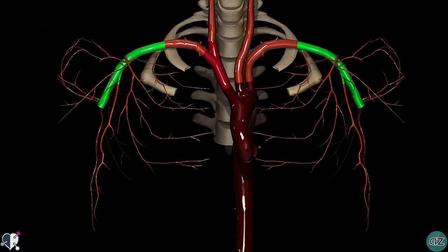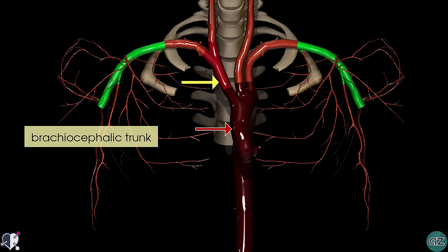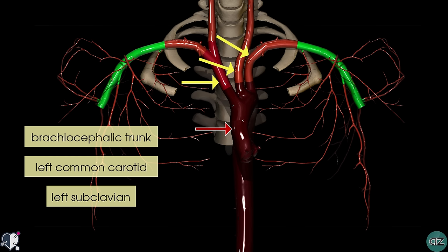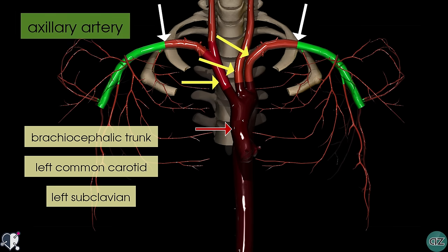What we're looking at here is the arch of the aorta with its three branches. You've got the brachiocephalic trunk, the left common carotid, and the left subclavian artery. As the subclavian arteries on either side cross the lateral edge of the first rib to enter the axilla, it becomes known as the axillary artery, which you can see here highlighted in green.